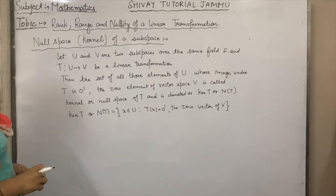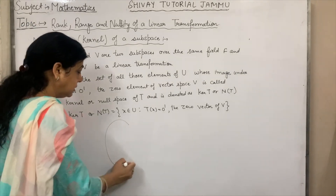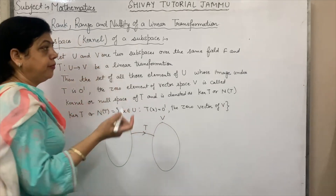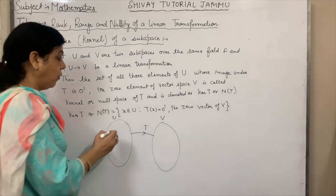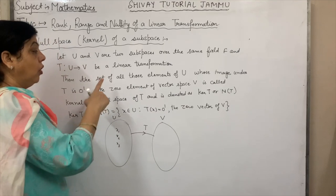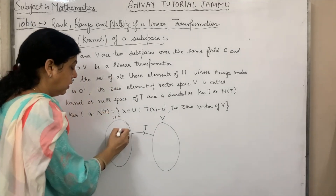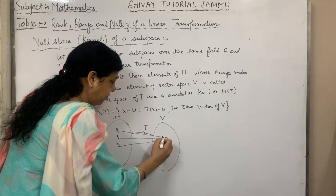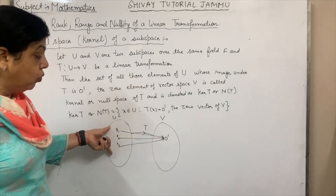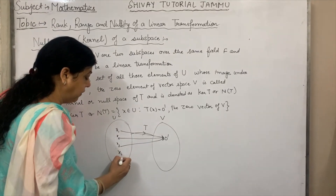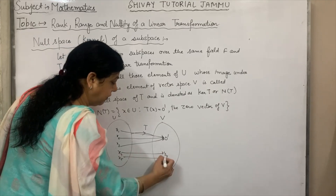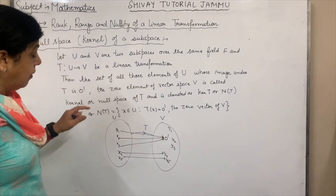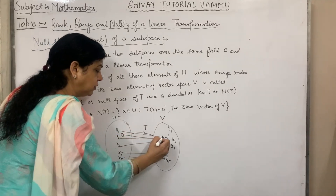What is null space and kernel of a subspace? Let U and V be two subspaces, and T be a linear transformation from U to V. Then the set of all elements of U whose image is zero dash — the zero vector — forms the kernel. For example, X4 and X5 map to Y4 and Y5, while Y1, Y2, Y3 are also present, and zero always goes to zero dash.